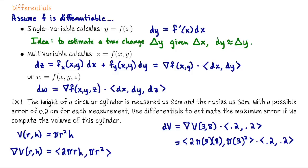Dotting with ⟨0.2, 0.2⟩, we get dV ≈ 35.81 cm³. This approximates ΔV, the change in volume if we're off by 0.2 in each direction.